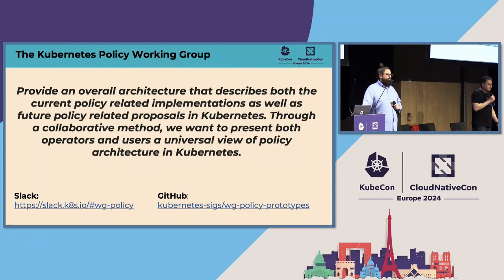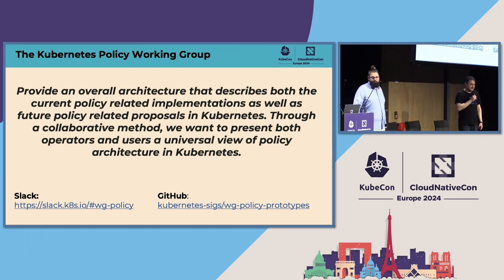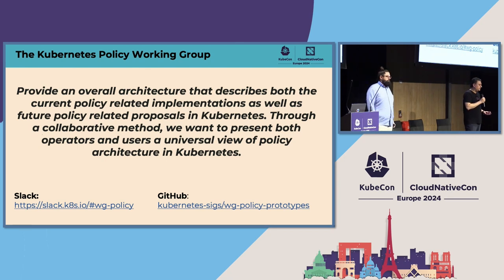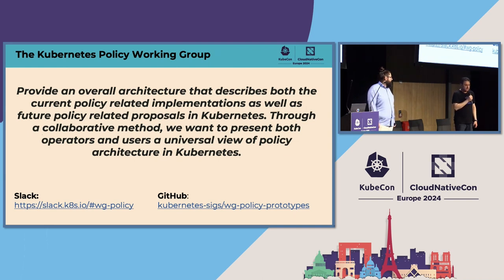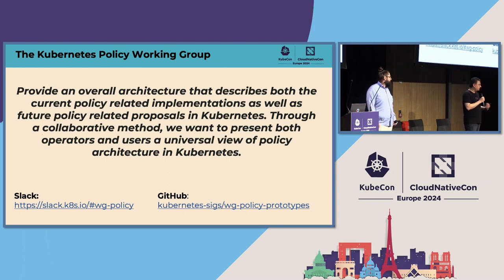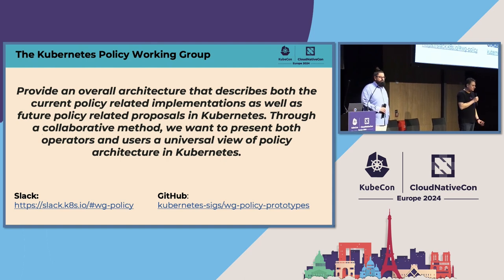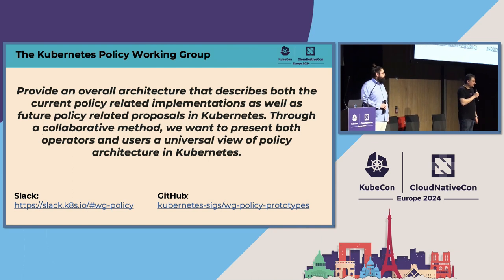Introducing what we do in the policy working group — this is a community forum, everybody's welcome to join, and we have bi-weekly meetings. The charter is to define and catalog architectures, different policy implementation types, and provide guidance on what users should use. We've done things like the policy reporting API, which is one of the initiatives that came out of the policy working group. There are a number of producers and consumers including Kyverno, Falco, and Trivy that can report policy results in a common structured manner.